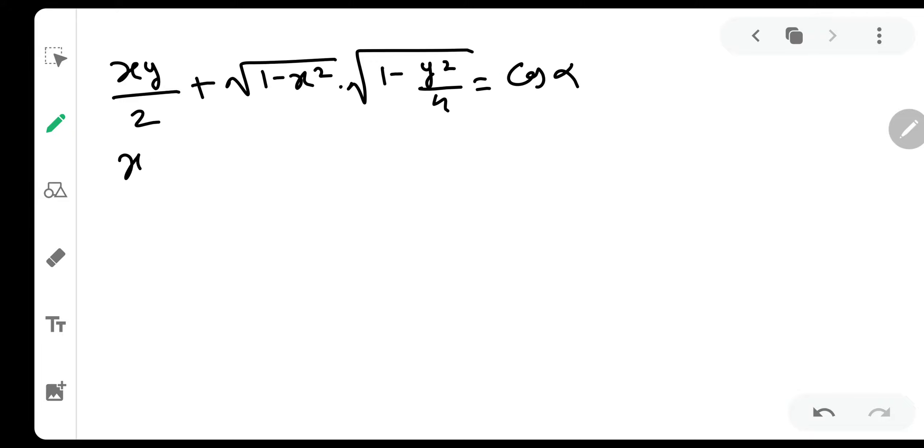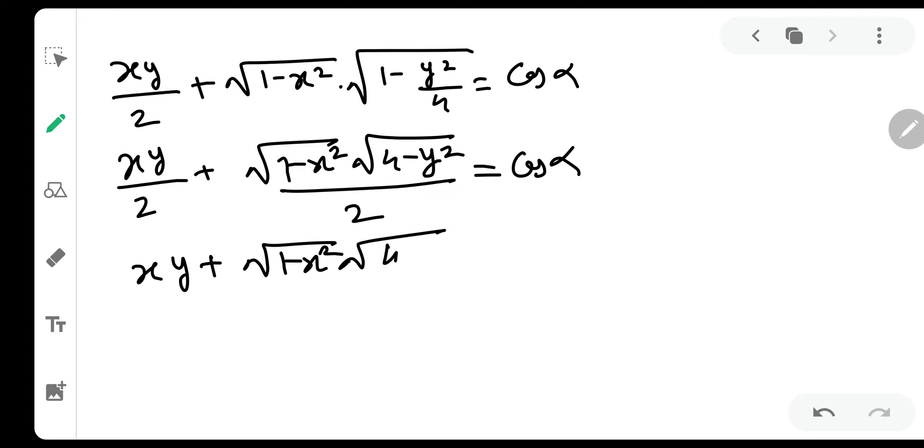Again, I am going with the flow. xy by 2 plus under root 1 minus x square. Over here, I will cross multiply 4 minus y square. And under root 4 will be 2. So this will be equal to cos alpha. That's it. I just cross multiplied 4 and given it the root sign. Now, I don't like the denominator. So I will say xy plus under root 1 minus x square under root 4 minus y square equal to twice of cos alpha.